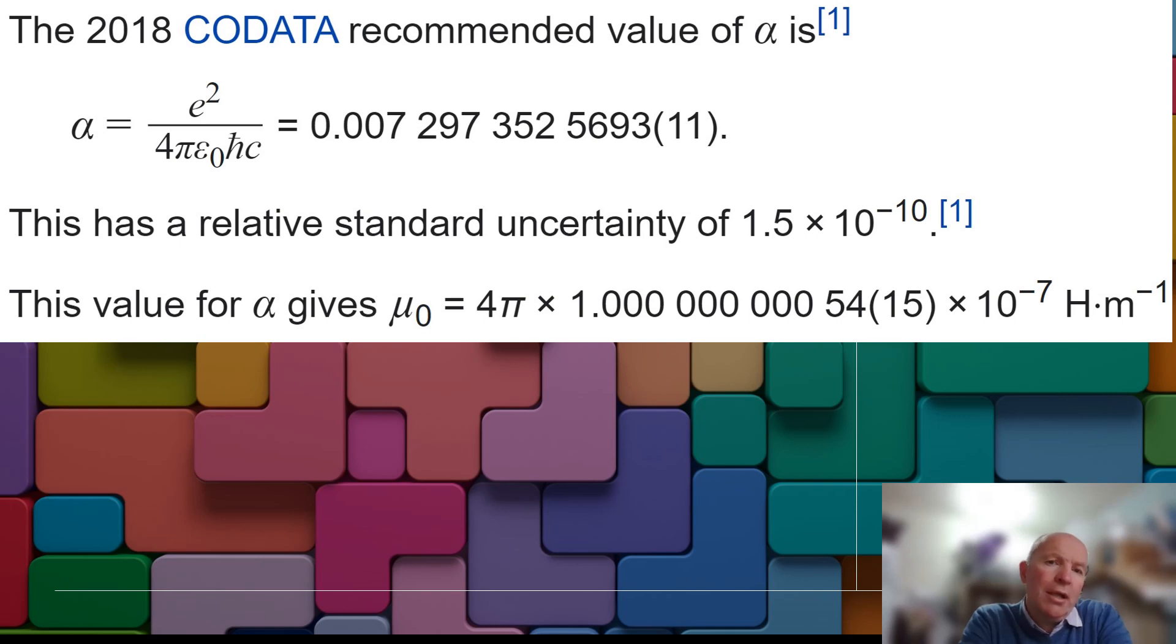1e to the 4 is 1e to the 8, multiply that by C divided by V at 0.1002 and we get a number that's e to the power of 7.